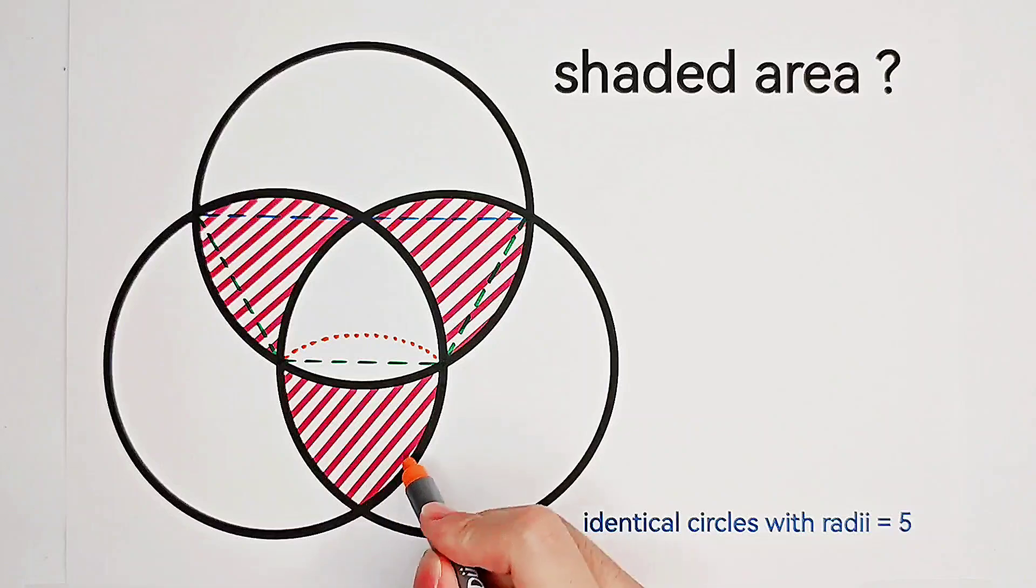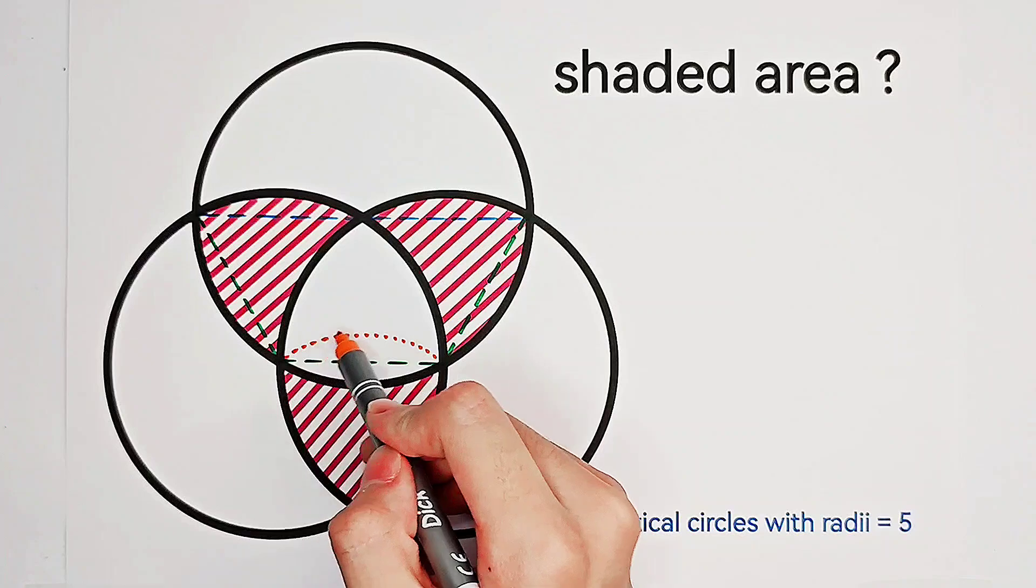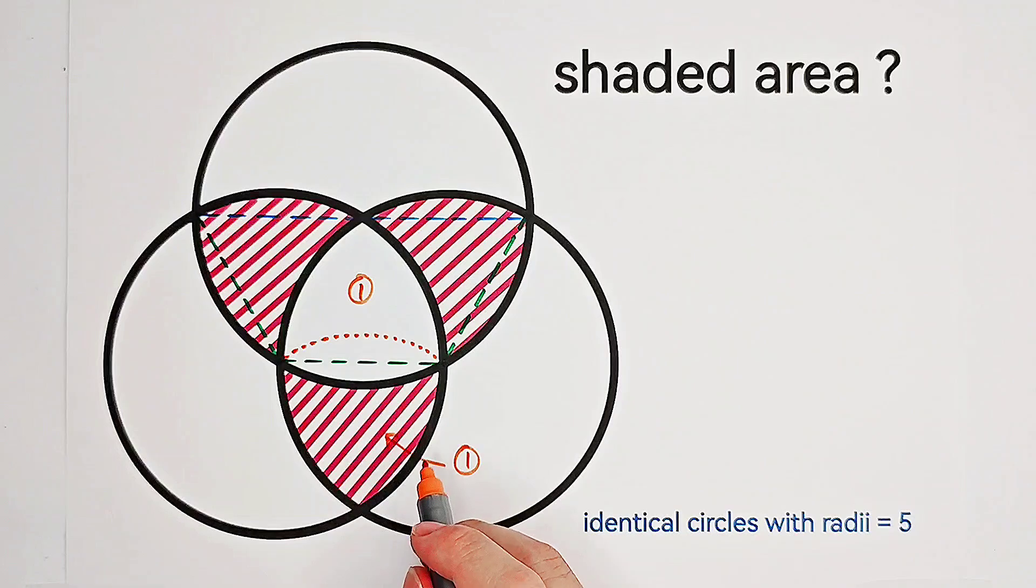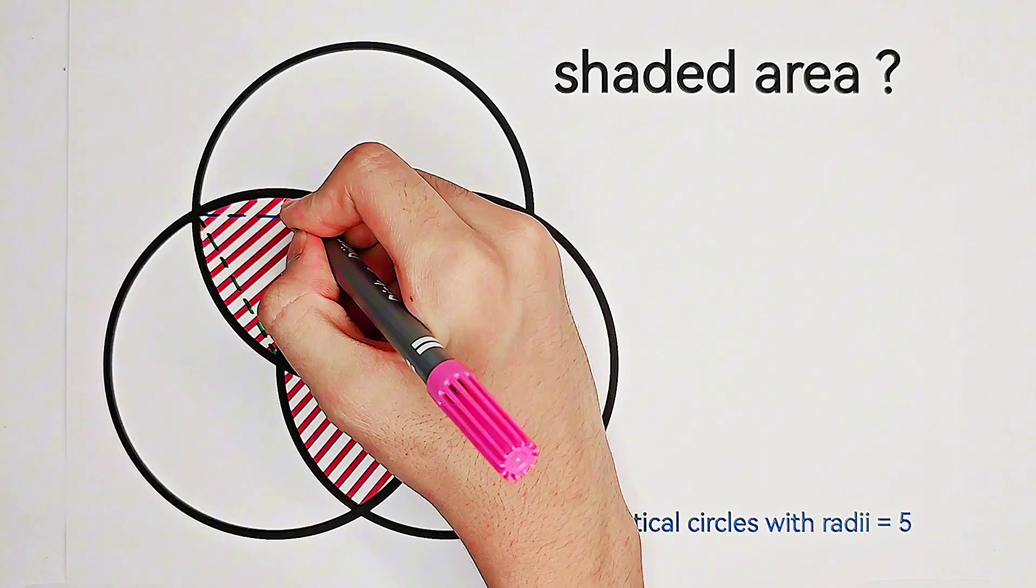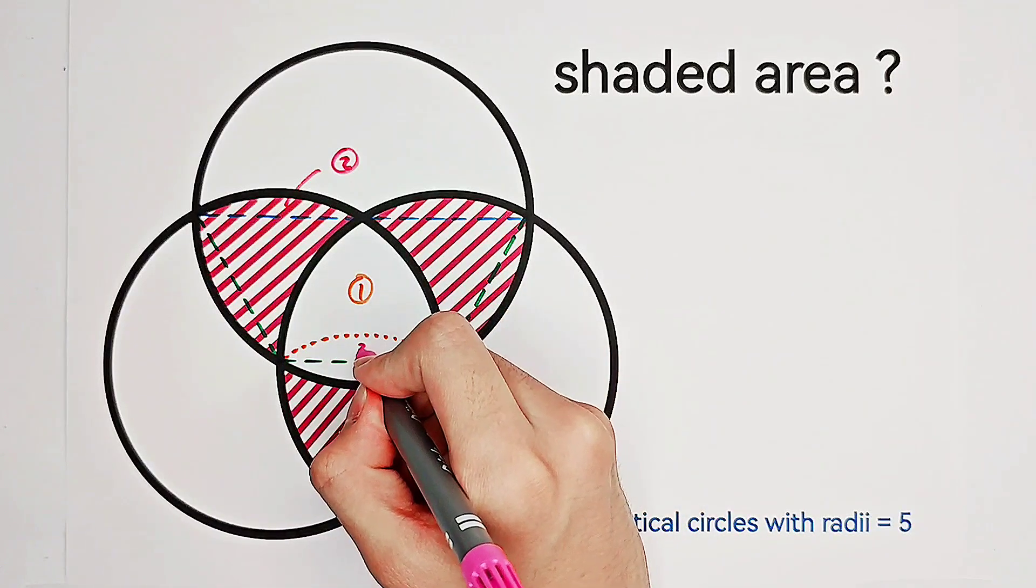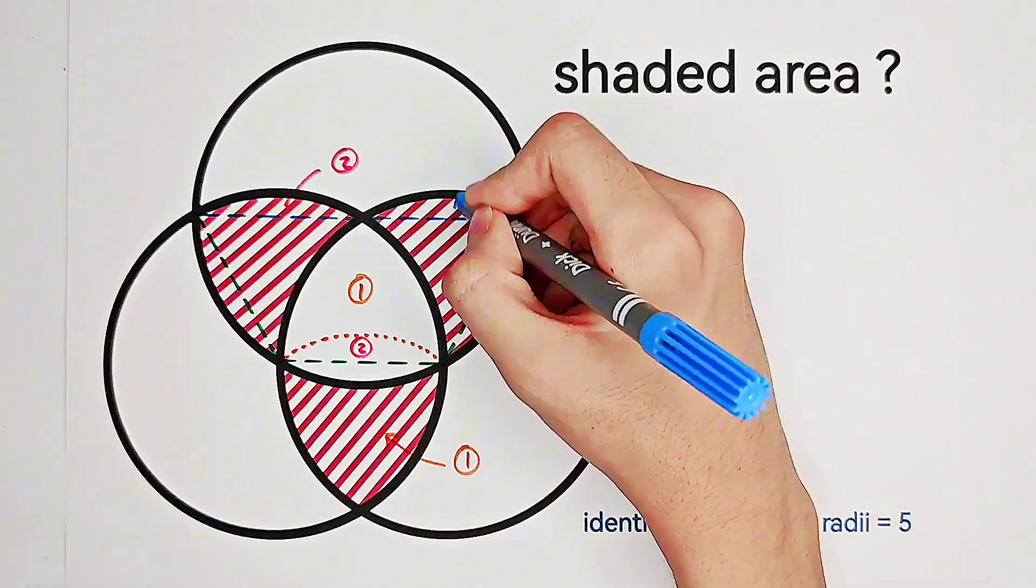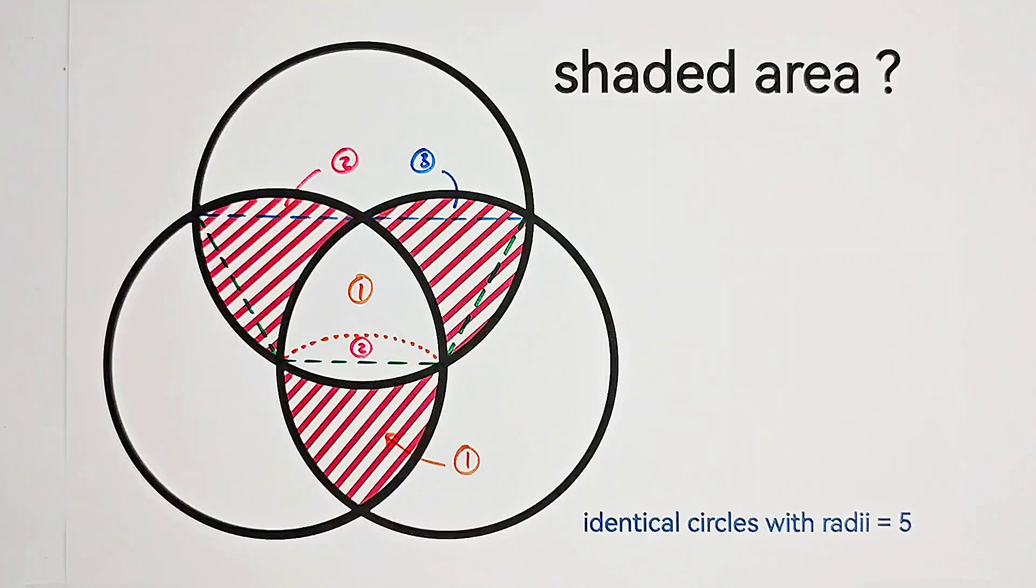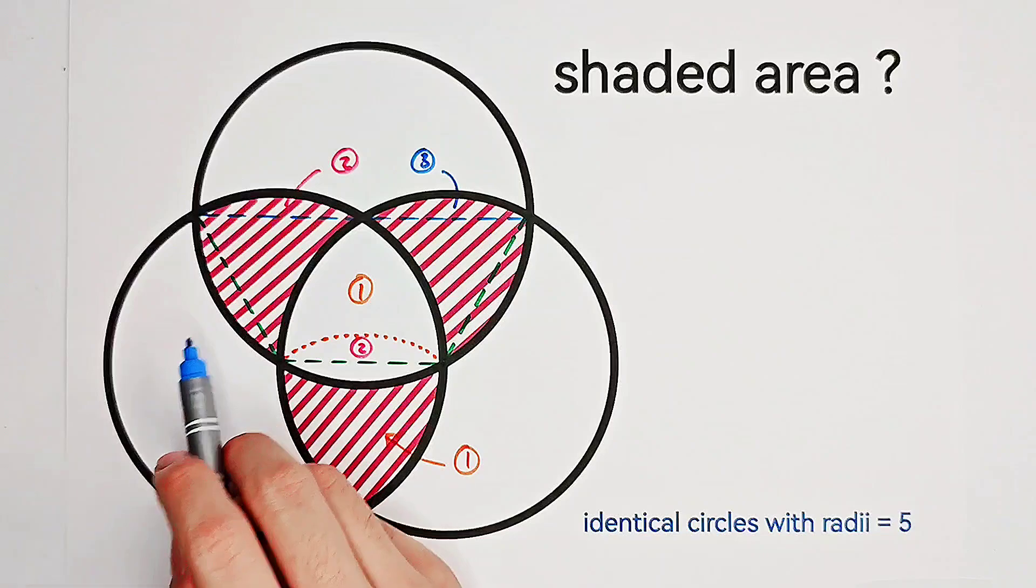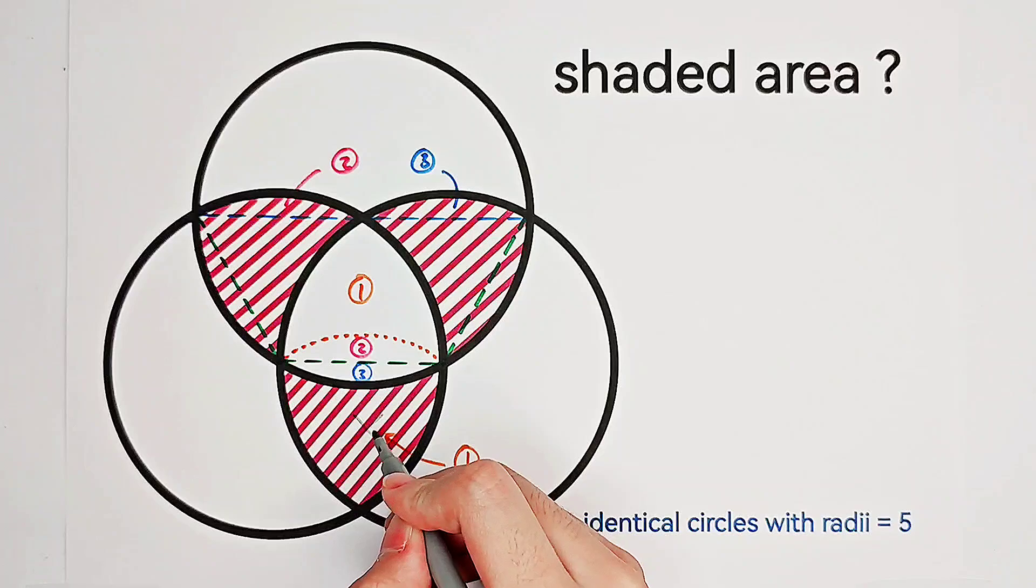If I label this area as number one, then this shape is also number one, has the same area as number one. If this one, this arch is number two, then this arch over here has also the same area as number two. If this arch is number three, then, because these six arches have all the same area, here, number three. So we cut this area and paste it to here.